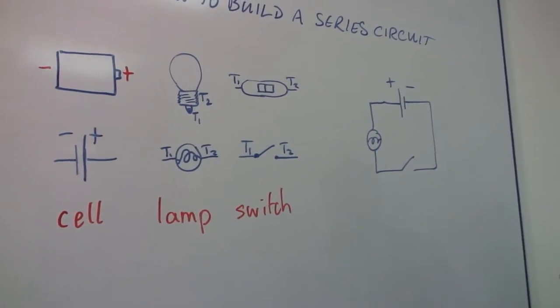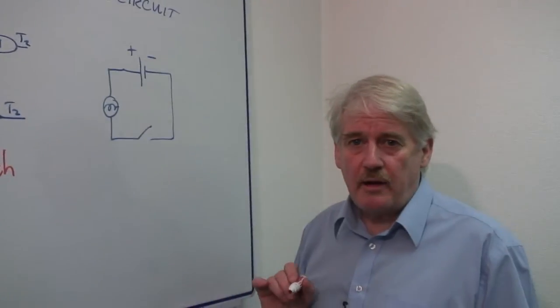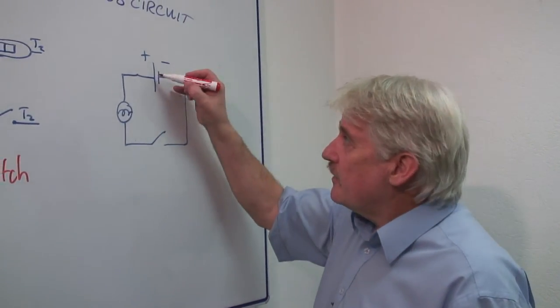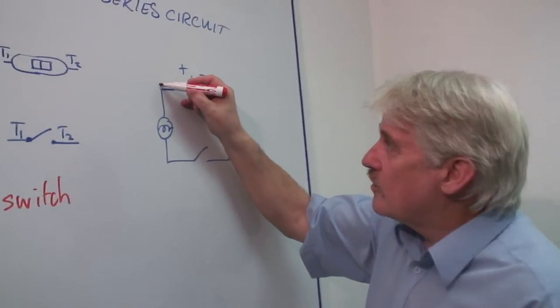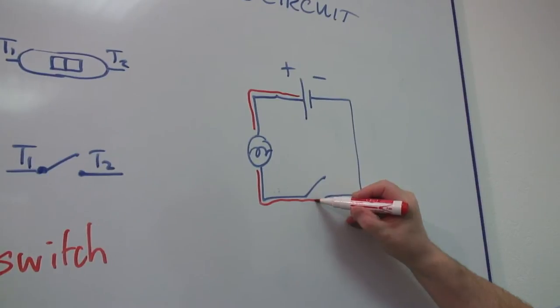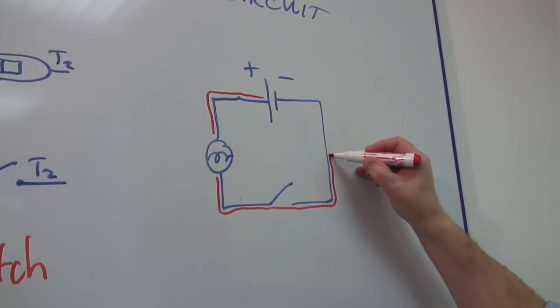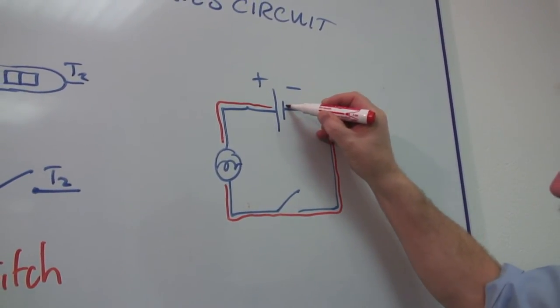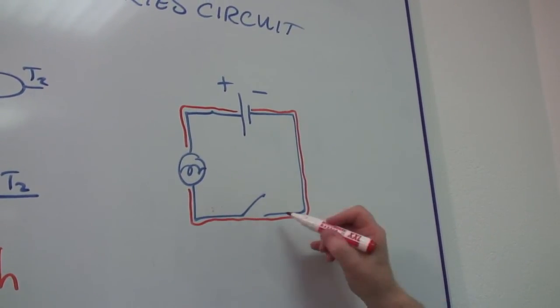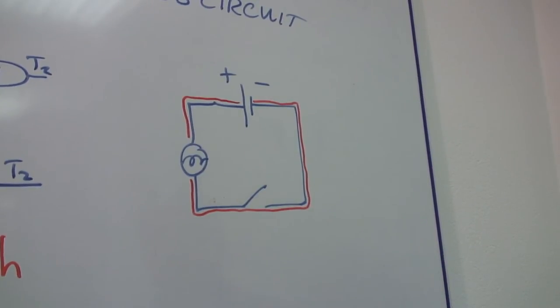In a series circuit there is just one single path which the electricity can make. If you trace it round, it goes round one single track, and if I draw a single line it should pass every single component in the circuit without interruption. I don't have to go over anywhere twice to get to the circuit.